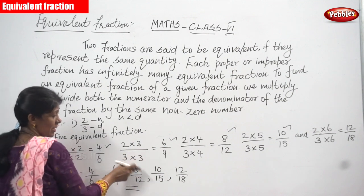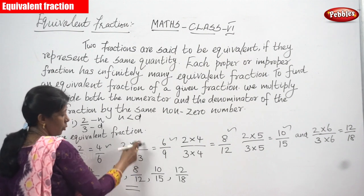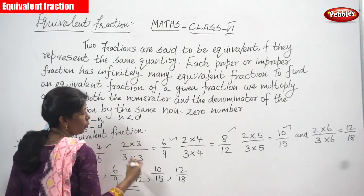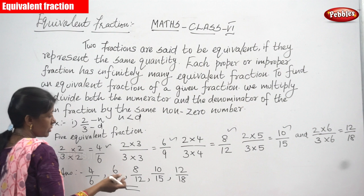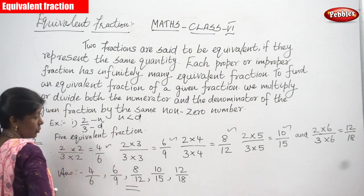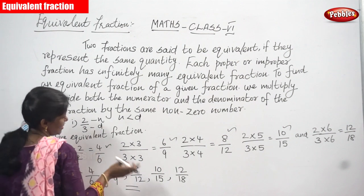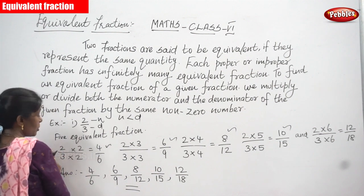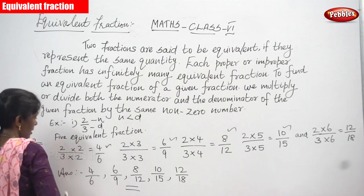If I take 3, I should not change the number — using 3 for numerator and 2 for denominator is completely wrong. Whatever number you have taken — 3, 4, 5, 6, or 7 — you have to multiply by both the numerator as well as the denominator. Only then can you get the equivalent fraction.